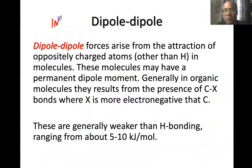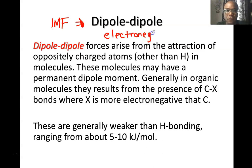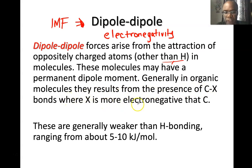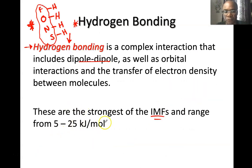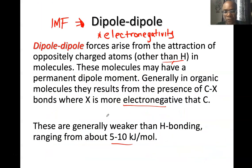The next type of IMF is dipole-dipole. This goes hand in hand with electronegativity, which is the affinity of an atom for electrons. These forces arise from the attraction of oppositely charged atoms other than hydrogen in molecules — the molecules may have a permanent dipole. In organic molecules, they result from C–X bonds where X is more electronegative than carbon. They are weaker than hydrogen bonding, with a strength of about 5 to 10 kilojoules, while hydrogen bonds have a strength of about 5 to 25 kilojoules.